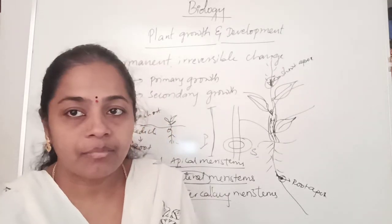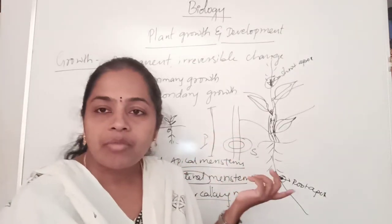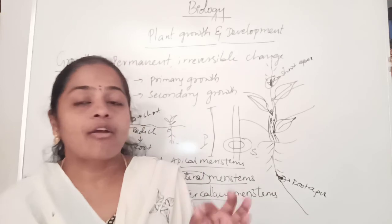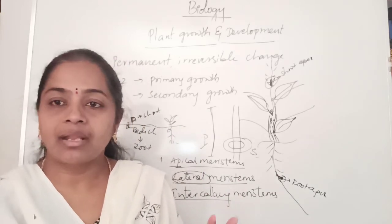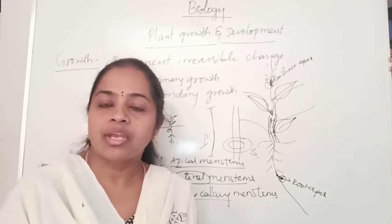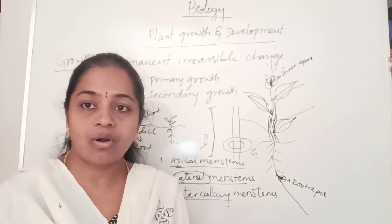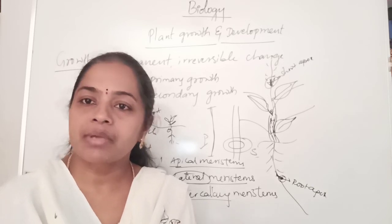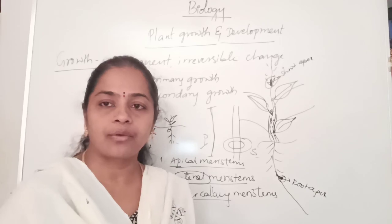Cambium is responsible for secondary growth. Cambium is present in dicot plants, and they have secondary growth. In monocots, cambium is absent; therefore, monocots do not undergo secondary growth. Monocots show only primary growth. Thank you.